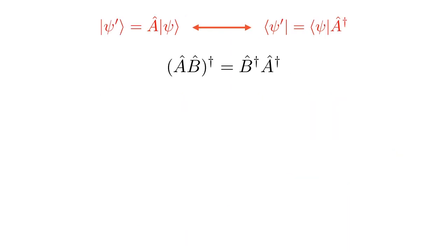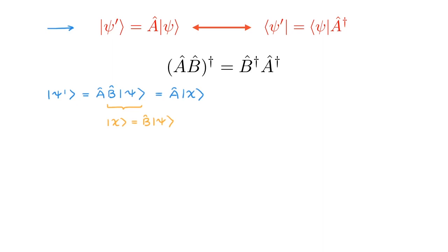The final relation we want to prove will actually be proved using the relationship between state space and dual space, and the relation tells us that the adjoint of the product AB is equal to the product of the adjoints B†A†. In this case we start by writing |ψ'⟩ = AB|ψ⟩. Remembering that the product of operators is defined by first acting on the state with B, we call B|ψ⟩ = |χ⟩, and then we can rewrite the whole thing as A|χ⟩. Now is the time to use the relation between state space and dual space: we write the bra ⟨ψ'| and use A|ψ'⟩ = AB|ψ⟩ to write it as ⟨ψ|A†B† by the definition of the adjoint.